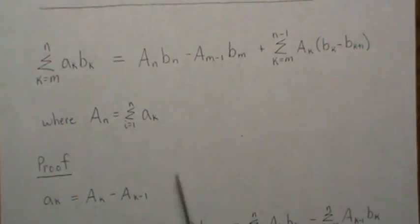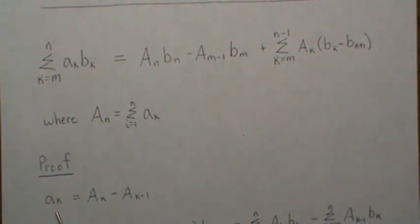We'll prove that. In the proof, we're going to note that a_k equals capital A_k minus capital A_{k-1}, because then all the terms here cancel with all the terms there except for the leading one.